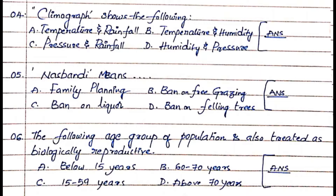Question number 6: The following age group of population is also treated as biologically reproductive. Option A. Below 15 years, Option B. 60 to 70 years, Option C. 15 to 59 years, Option D. Above 70 years. The answer is Option C. 15 to 59 years.